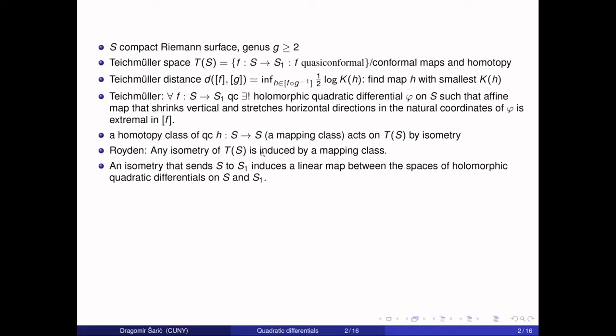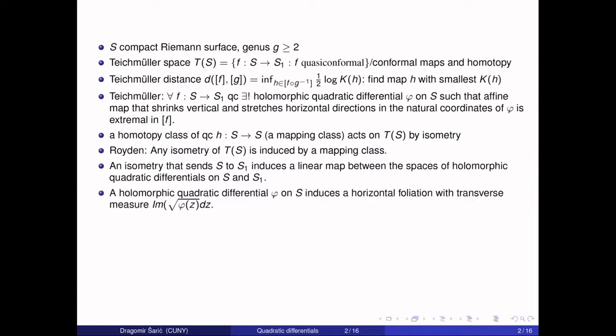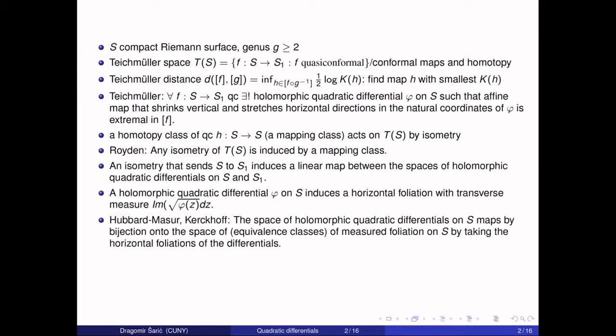An isometry of the Teichmüller space which sends S to S1 induces a linear map between the spaces of holomorphic differentials on S and S1. A particular holomorphic quadratic differential on S has a notion of horizontal foliation, where the transverse measure is the imaginary part of the square root of the quadratic differential times dz. In view of the importance of quadratic differentials in the Teichmüller theorem and Royden's theorem, the question is: what is the set of all possible horizontal foliations you get when you consider every possible holomorphic differential on a Riemann surface?